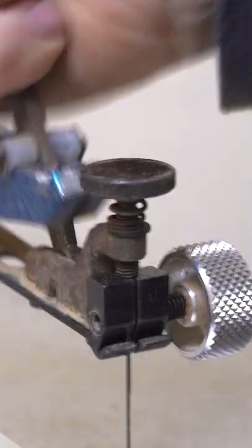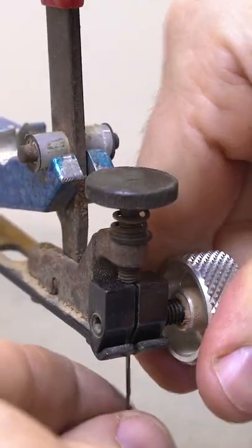To change a scroll saw blade, release the tension on the top arm, remove the blade from the top holder.